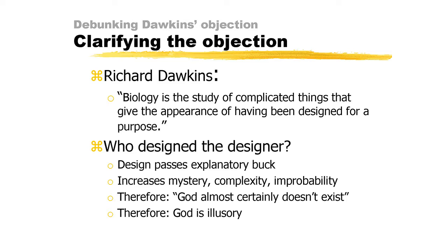According to Dawkins' 'who designed the designer?' objection, appealing to an intelligent designer to explain nature's complexity — that is, its apparent design — is an explanatory failure. Why? Because it merely passes the explanatory bar. The intelligent designer hypothesis transfers the mystery of nature's complexity, which is the puzzle to be explained, to the mystery of the designer's complexity, which is a new puzzle to be explained. But this, in turn, generates another puzzle: the mystery of the complexity of the designer's designer, and so on.